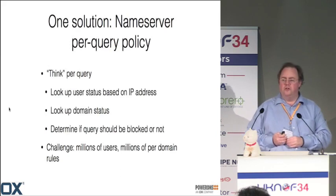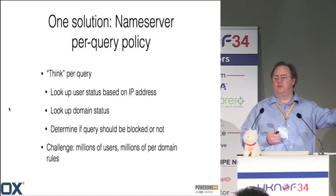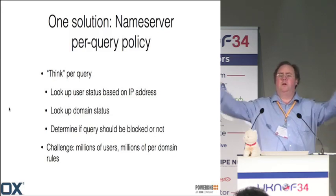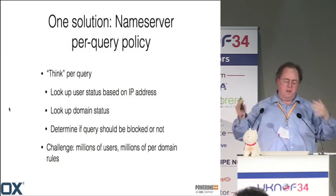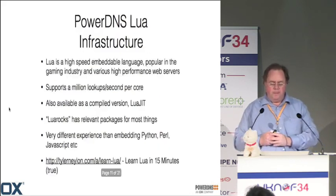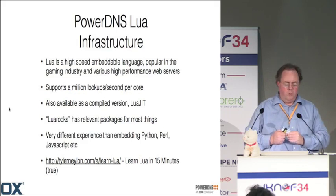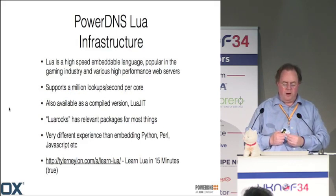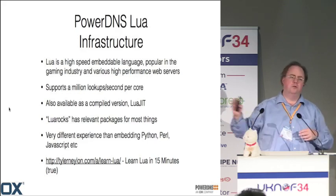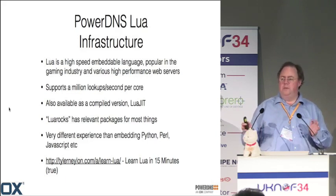The actual solution is a nameserver that can think about each query. The query comes in, it looks up what kind of filtering this user wants, what we know about this domain name, should this query be blocked or not. The challenge is you have millions of users and millions of domain names. We use the Lua infrastructure — a powerful programming language that easily does a million lookups per second per core. There's a pre-compiled version called Lua JIT, and Lua Rocks lets you install packages to make Lua talk to your database, DHCP server, or flat database.